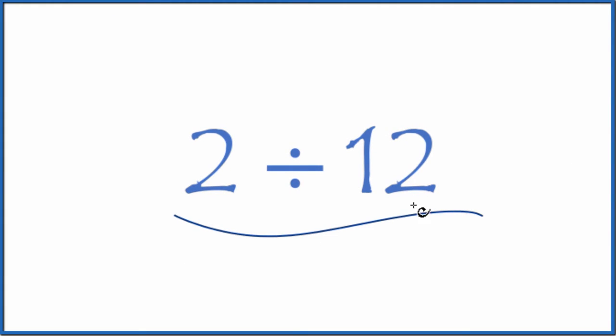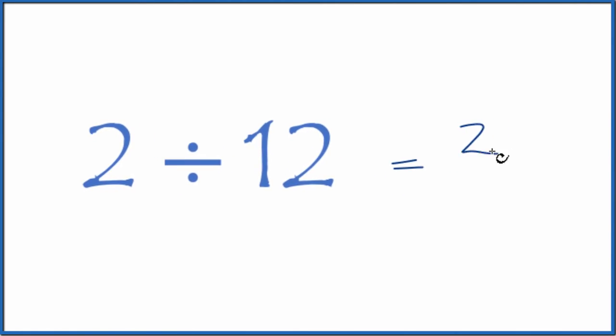Let's divide 2 by 12. The first thing we can do is think about this as a fraction, because we have 2 over 12. That's the same thing as 2 divided by 12.